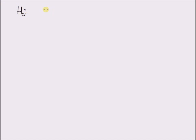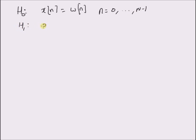So given the models: under the null hypothesis, we have x(n) = w(n), where n = 0 to N−1. Under the alternate hypothesis, x(n) = A + w(n), where A is a DC level.